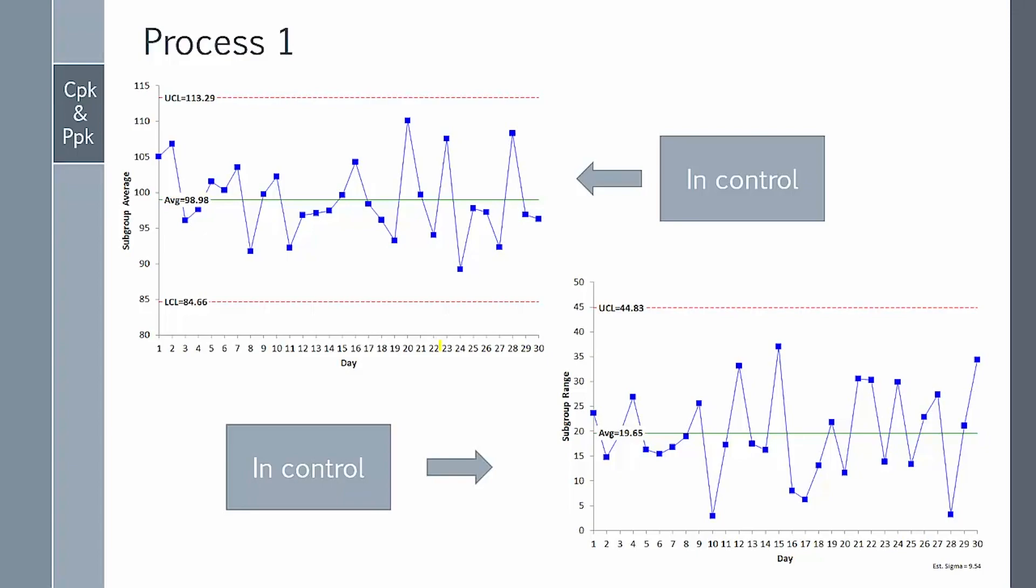We're going to have two processes that we use the same data to analyze using an X-bar and R chart. In process number one, here is an X-bar chart on top. And you can see that all our points are within the control limits and we don't have any patterns. So this process is in statistical control. We can predict what it's going to make into the future. The same is true with the subgroup range chart. Everything is within specifications. We don't have any pattern. And this is the chart down here that we would use to calculate the estimated standard deviation to use in the CPK calculation.